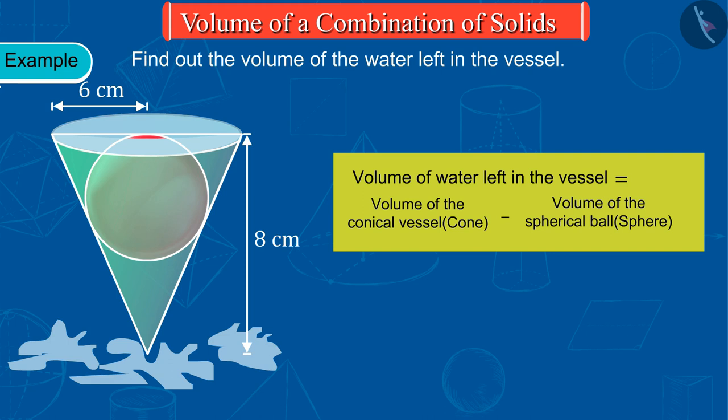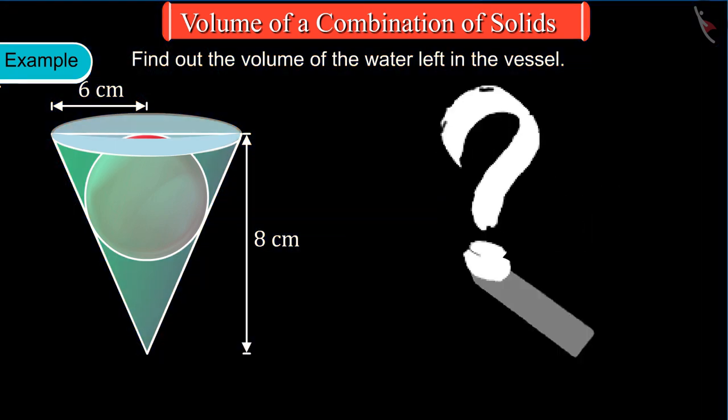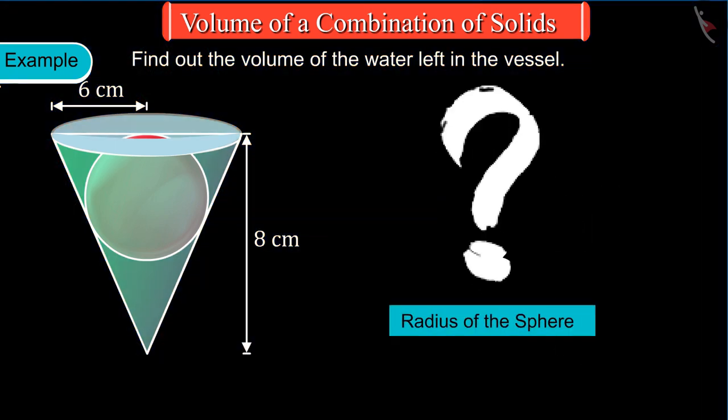From the figure, the values of the radius and height of the cone are known to us. But the value of the radius of the sphere is not known to us, which we have to find out. Can you tell how we can find out the radius of the sphere?